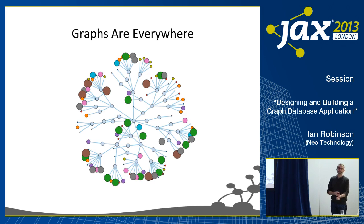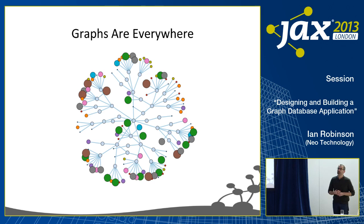All of these questions in some form or another depend upon understanding the ways in which the things in that domain are connected or related, and very often the weight, strength, or quality of those relationships. So all of these are graph problems — because graphs are probably the best abstraction we have today for modeling connectedness, with edges and vertices, or in the Neo4j world, nodes and relationships.